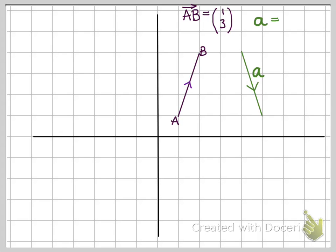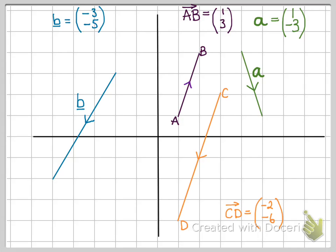Next one, we've got this vector represented by this bold A. This one has gone 1 to the right and 3 down, so we get 1 and minus 3. Here we've got vector B with the line underneath. This one's going 3 to the left and 5 down, so we get minus 3, minus 5. We'll do one more. This CD vector has gone 2 to the left and 6 down, so we get minus 2, minus 6.